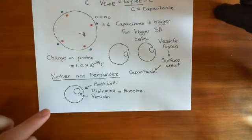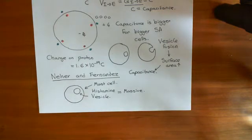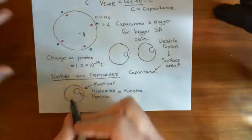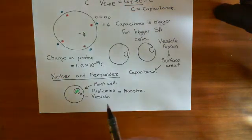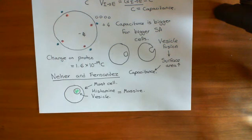They used mast cells for a technical reason: because they were already doing very fine measurements, and the actual changes in capacitance are tiny. They wanted to maximize the effect they were seeing so that their measuring equipment could actually detect this change. They used mast cells because they have big vesicles and therefore produce hopefully measurable changes in membrane capacitance. When they stimulated the mast cell to release the histamine vesicles, those vesicles fused with the plasma membrane. And they did indeed see that membrane capacitance went up, confirming this is a good assay. We'll continue in the next video.